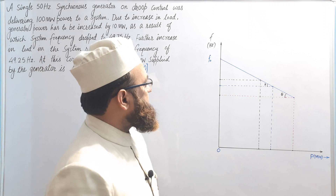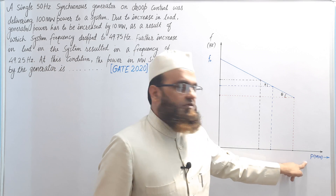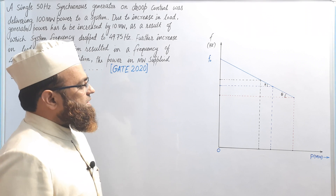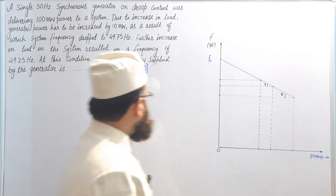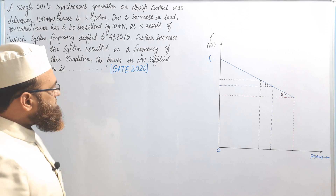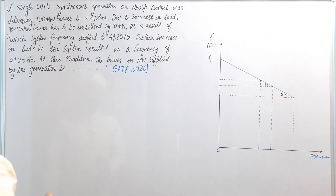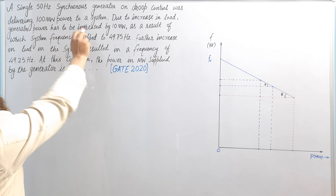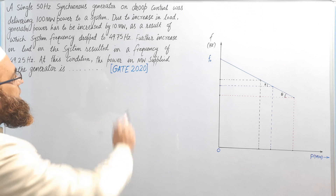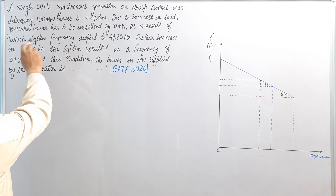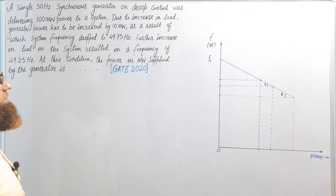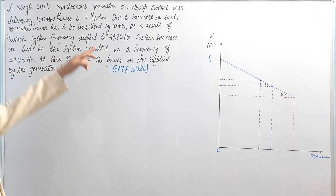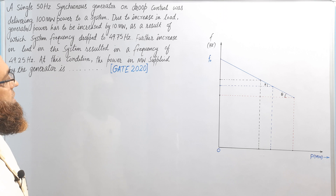Dear students, in the previous lecture we discussed the FP characteristic of an alternator. Now we are going to solve a problem based on it, which was asked in GATE 2020. The statement of this problem is: a 50 Hz synchronous generator on droop control was delivering 100 megawatt power to a system. Due to increase in load, the generator power has to be increased by 10 megawatt, as a result of which the system frequency dropped to 49.75 Hz.